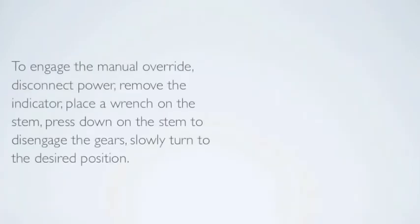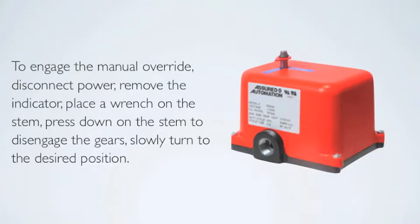To engage the manual override, disconnect power, remove the indicator, place a wrench on the stem, press down on the stem to disengage the gears, slowly turn to the desired position.